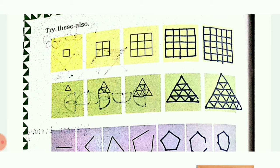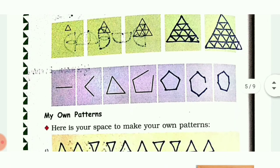Next one is a triangle pattern. One triangle in the first picture; in the second picture it has increased to four triangles; in the third picture it is growing further. Next, the lines are increasing: the first one has one line, the second has two lines, the third has three lines.